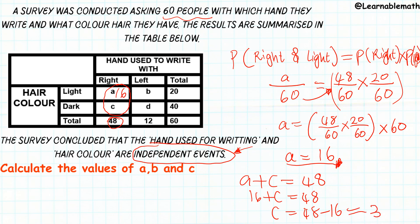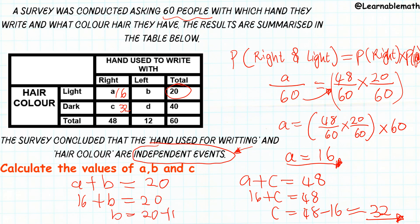So c is 32. To find b, we know that a plus b equals 20 (the light hair total). Since a is 16, b equals 20 minus 16, which equals 4. So we have solved for all three values: a equals 16, b equals 4, c equals 32. The key was using the independence statement and recalling the rule: if two events are independent, the probability of A and B equals the probability of A times the probability of B.